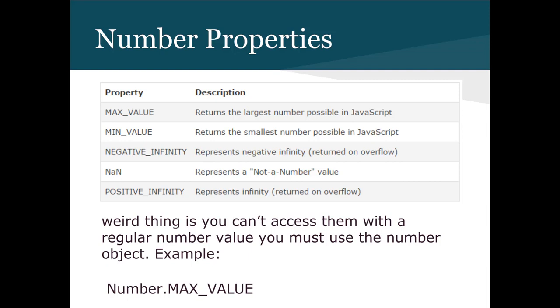Number properties seem more like math class properties, but they give you the limits of the number object. Other languages have multiple numeric data types so the program knows how much memory to allocate. JavaScript does not have this, so we need to know its maximum limits. This is why you need to use the Number object rather than a piece of numerical data to reference these properties.